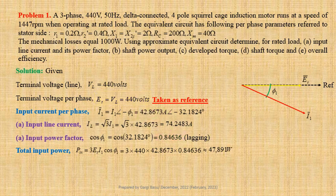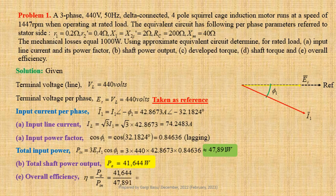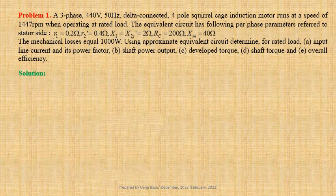Now we shall determine overall efficiency of the motor. η = Po / Pin. We have obtained total shaft power output Po = 41644 W. Therefore, η = 41644 / 47891 = 0.86956 per unit, or 86.956%.